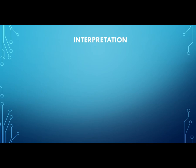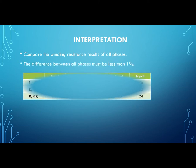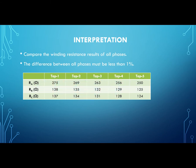Now we come across the interpretation of this test. We compare the winding resistance results of all the phases. The difference between all phases must be less than 1%. As an example, a sample result for winding resistance test of a transformer with 5 tap positions is given. We can see from the results that winding resistance of red phase is far higher than yellow and blue phases, so the test result shows that high voltage red phase winding is faulty.